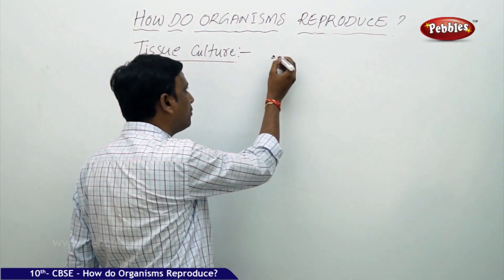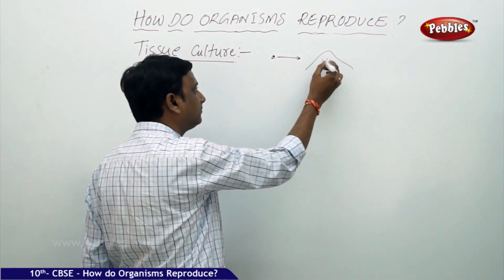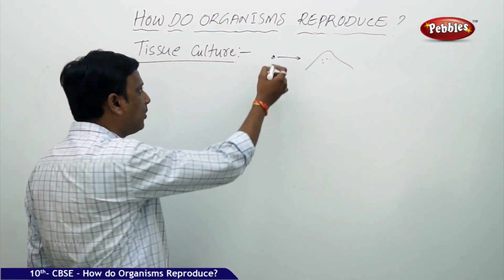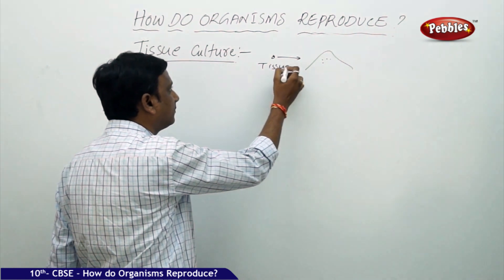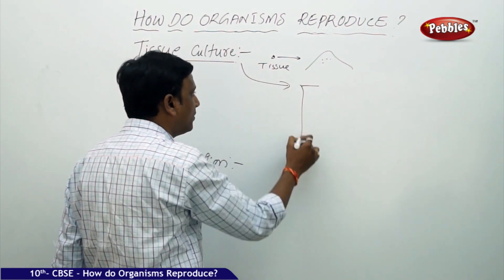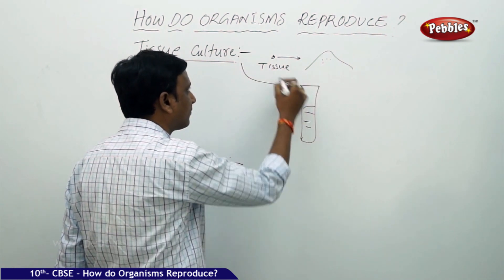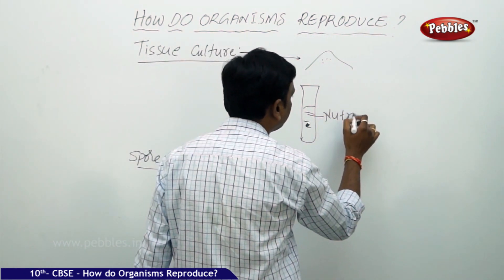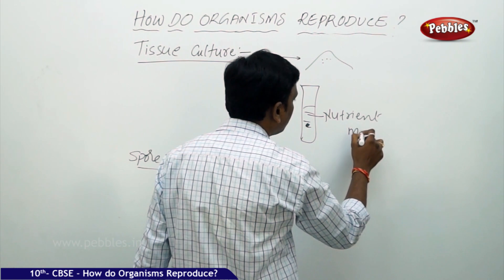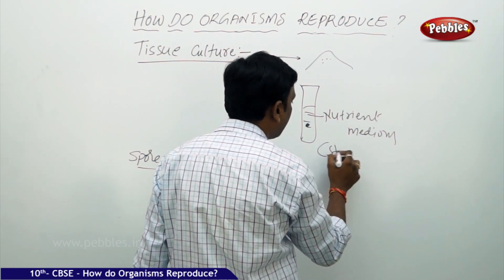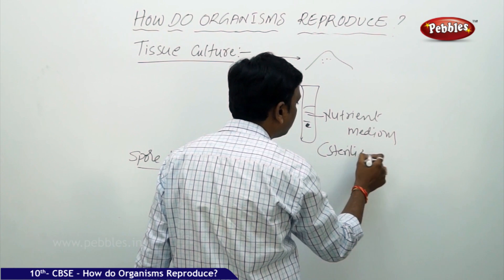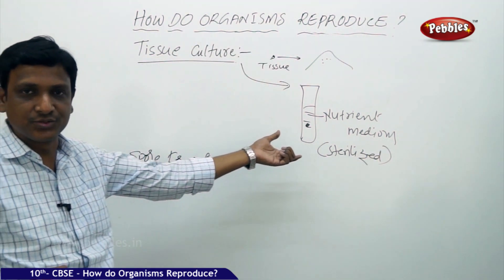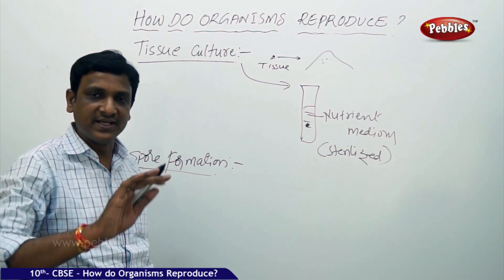The small tissue that is collected cannot be kept in the soil — it will decompose and cannot grow into a new plant. So instead, we keep the tissue in a test tube in a nutrient medium. Moreover, it is sterilized — that means made free from bacteria, otherwise bacteria or fungus will destroy the tissue.